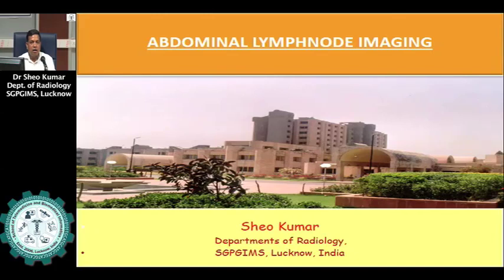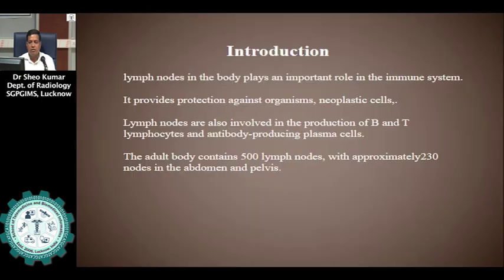Today, I will discuss Abdominal Lymph Node Imaging. Lymph nodes in the body play an important role in the immune system. They provide protection against neoplastic cells. Lymph nodes are also involved in the production of B and T lymphocytes and antibody-producing plasma cells. The adult body contains around 500 lymph nodes, with approximately 230 nodes in the abdomen and pelvis.